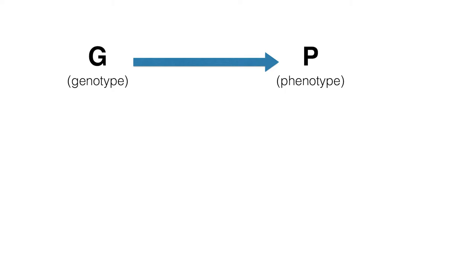What I'll talk about next is the connection between biological diversity and the underlying genetics that gives us that diversity. We can imagine some relationship between the genetic variation — the genotype, the individual's genetic makeup — and the individual's phenotype: their appearance, how they look, what they do, anything about the organism that could potentially affect their survival and reproduction.